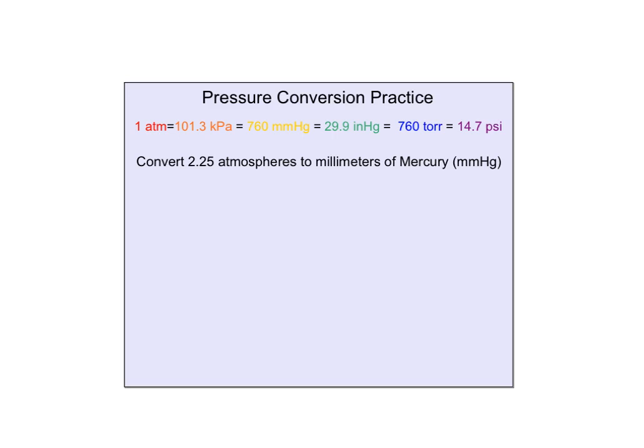This one says convert 2.25 atmospheres. So that's what's given, 2.25 atmospheres. And they said convert it to millimeters of mercury. So at the end, when we get our answer, we want it to be in millimeters of mercury. That's the goal. So really, I'm looking up here. Here's my atmospheres. This is the unit that they gave me. MMHG is right here. This is what we want.